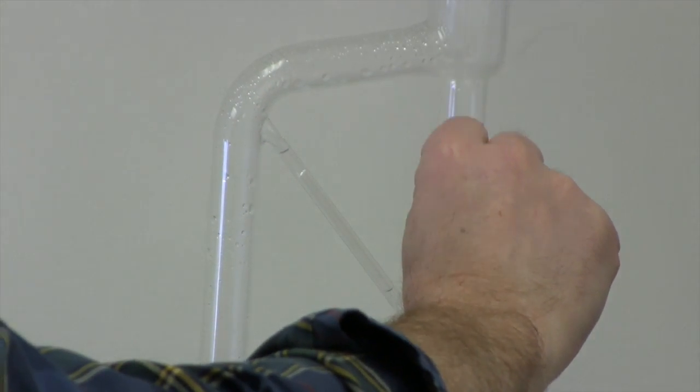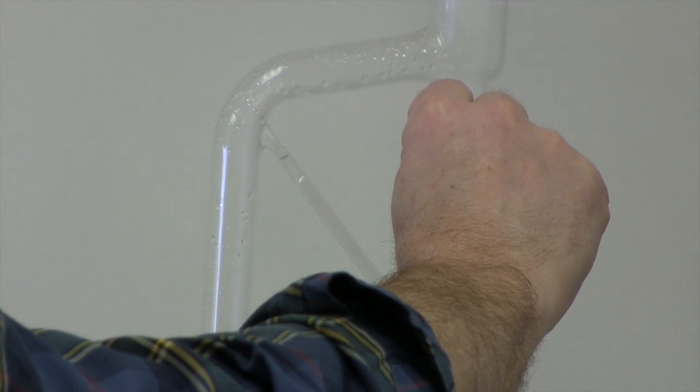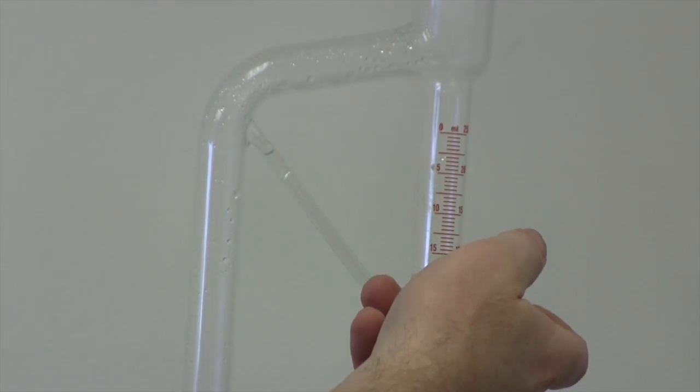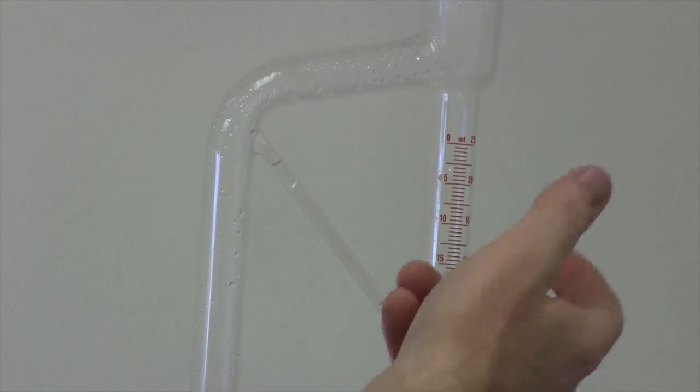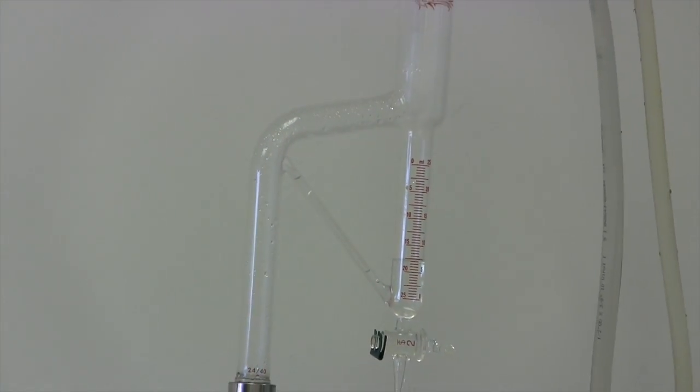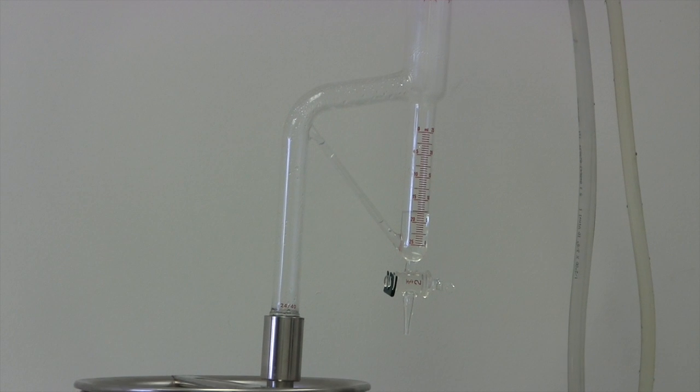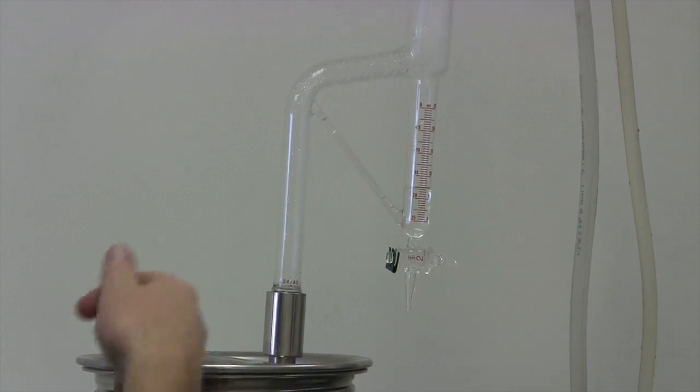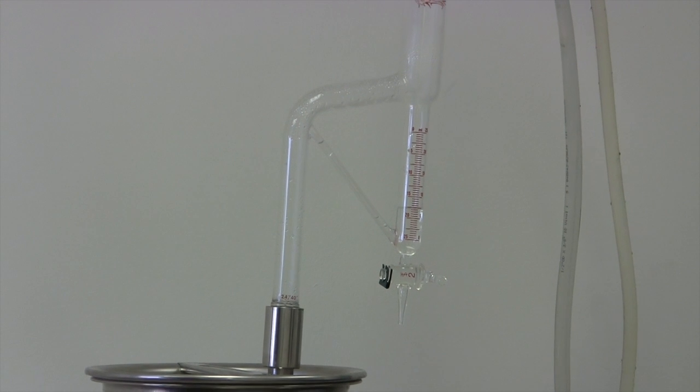And the oil layer, which will be on top, will continuously grow until this entire trap fills up with oil. And at that point, we'll need to drain off the oil and then shut it down, shut the trap, shut the valve and then let it fill up again.